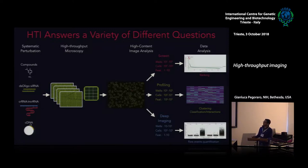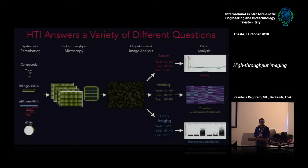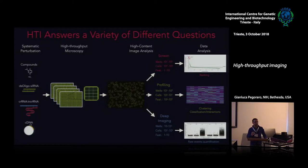Different ways of using HTI really start differing in the analysis phase. We can use it for screening applications with compounds and siRNA reagents, or for profiling — getting a description of an experimental treatment by looking at hundreds or thousands of different phenotypic measurements. And today I'll focus on using automated microscopy to define with high precision extremely rare or extremely detailed biological events.